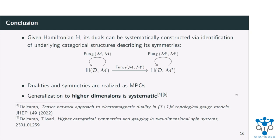To conclude: given a Hamiltonian and its symmetries, I can extract a categorical description of its symmetries, and from this I can construct all of its possible dualities. Given any Hamiltonian, I can systematically list all possible dual Hamiltonians. These dualities are realized as matrix product operators, as are the symmetries. The advantage of this categorical formulation is that there's a systematic way — called categorification — of going to higher dimensions, which is something we have been working on.